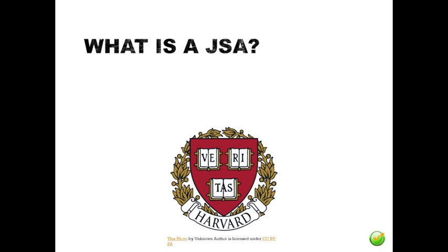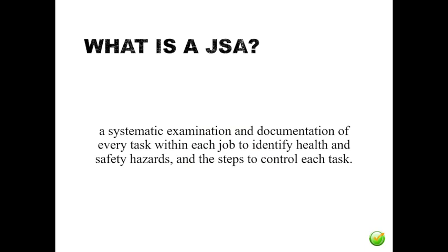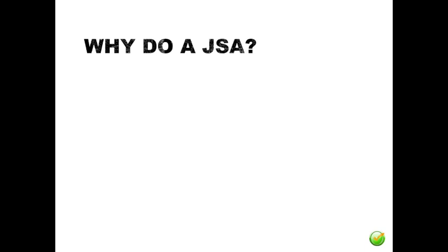According to Harvard University, a job safety analysis (JSA) is a safety tool that can be used to define and control hazards associated with a certain process, job, or procedure. It is a systematic examination and documentation of every task within each job to identify health and safety hazards and the steps to control each task.